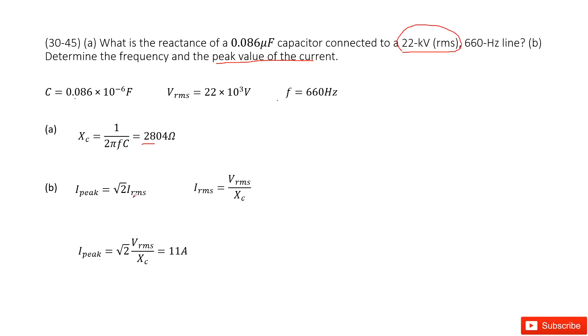So next, how do you find I_RMS? Use the RMS voltage divided by the reactance X_c. Now you input this I_RMS into the equation and you get the answer there.